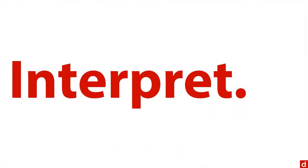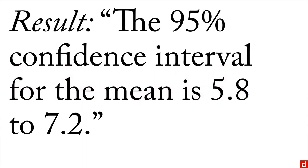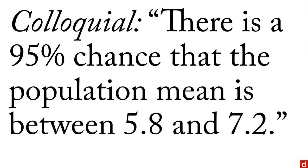No matter what you do, you have to interpret a confidence interval. The statistically accurate way is this: you would say the 95% confidence interval for the mean is 5.8 to 7.2. That's just taking the output from your computer and sticking it into sentence form. The colloquial interpretation goes like this: there's a 95% chance that the population mean is between 5.8 and 7.2.